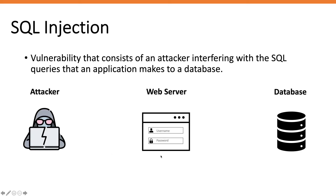Imagine you have an attacker, a web server, and a database. The application has an authentication functionality where the user puts in their username and password. A query is made to the database to see if the username and password exist, and if they do, the user is presented with their profile page. If incorrect credentials are entered, an error message is shown. We clearly have two input vectors — the username field and password field — that talk to the backend database, so we need to test these for SQL injection.